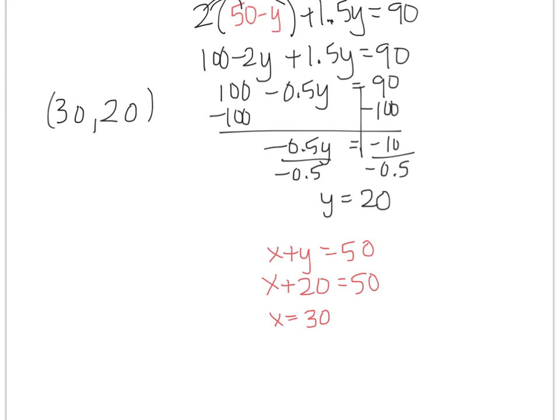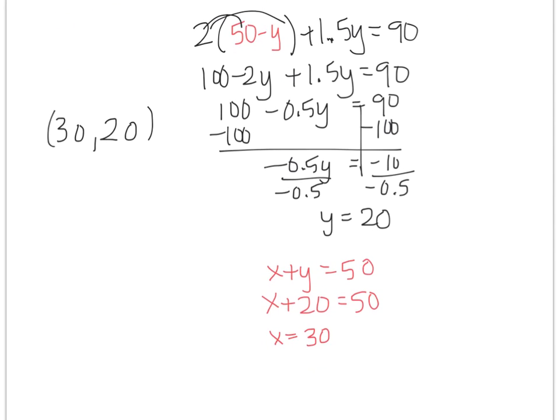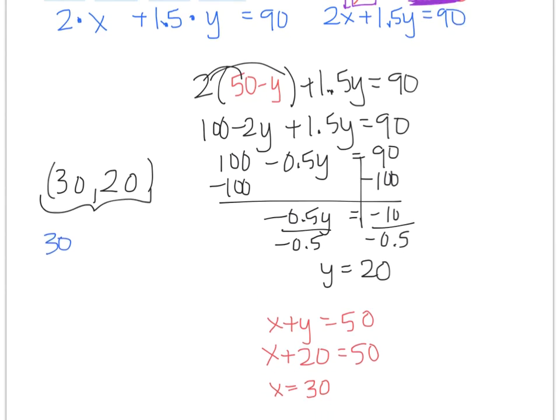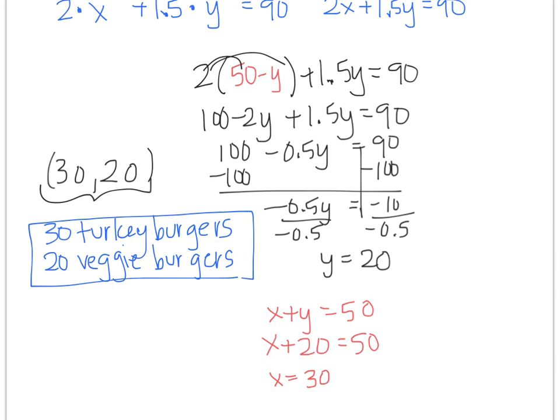So in a random system, this would be the answer. But it was a word problem. So we have to tell the reader what 30 comma 20 means. It doesn't just mean a random intersection point. There was a story behind it. So the x value was turkey burgers. And the y value was veggie burgers. So 30 comma 20 is partially correct. But the better answer is going to say 30 turkey burgers and 20 veggie burgers. Because the question said find the number of turkey burgers and find the number of veggie burgers, not just what's the intersection point. Alright, if you have any questions, write them down and ask me when you come to class.